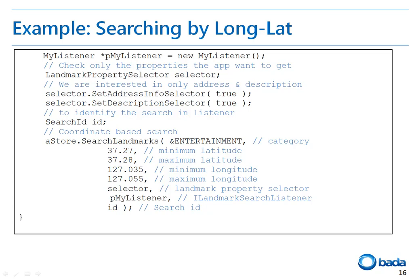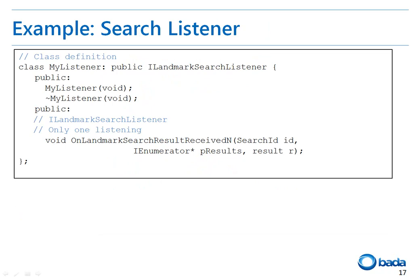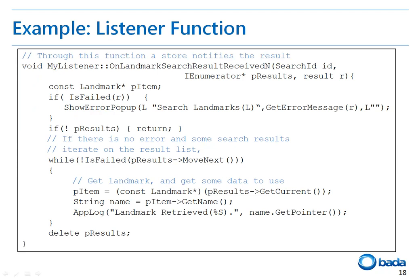Now let's look at how to search for a landmark by giving the latitude and longitude values. In order to get alerts for search results, a listener is required, so I have created this first. While searching for the landmark, interesting landmark properties can be enabled using LandmarkPropertySelector. Here, I have enabled the address info and description. Then the SearchLandmarks API is called with the listener, latitude, longitude, and landmark property selector parameters. The listener for the search result is MyListener in our sample code. The MyListener class mainly contains one method: OnLandmarkSearchResultReceivedN, which is the callback for the search results of the landmark.